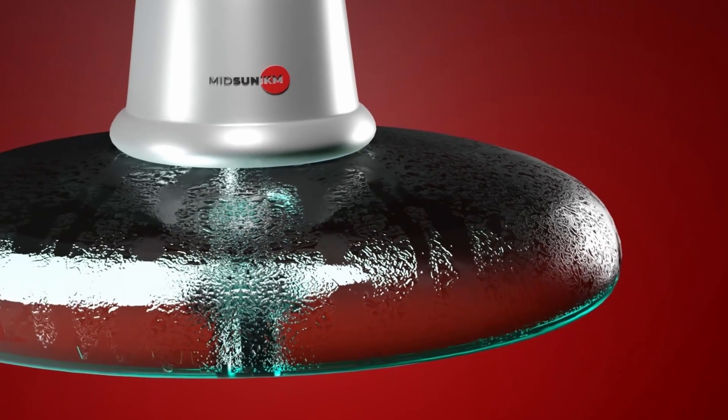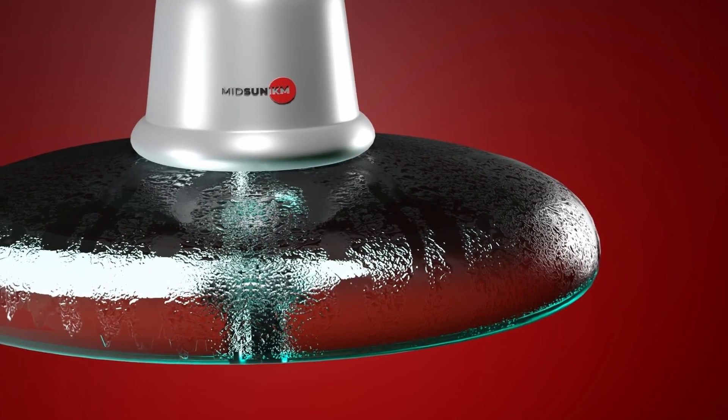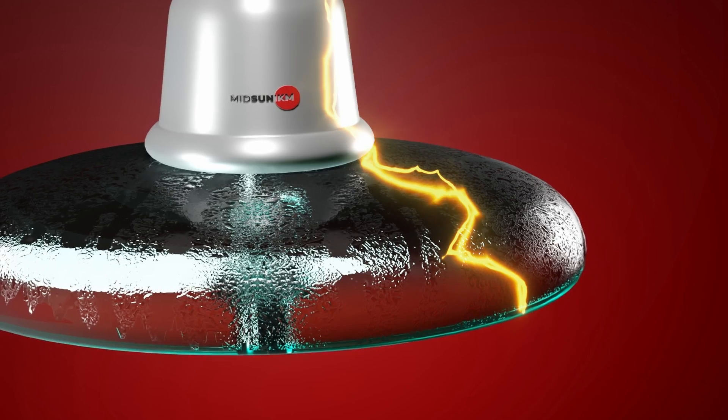Under polluted conditions, high leakage current will flow on the insulator surface and dry band arcing may take place.